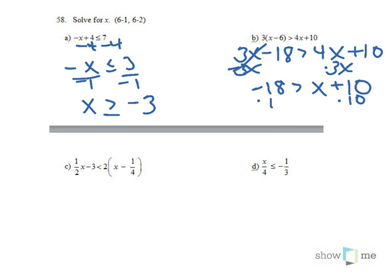And then I need to subtract 10 from both sides. So negative 28 is greater than x. That is the same thing as saying that x is less than negative 28. So either one of these answers are correct.